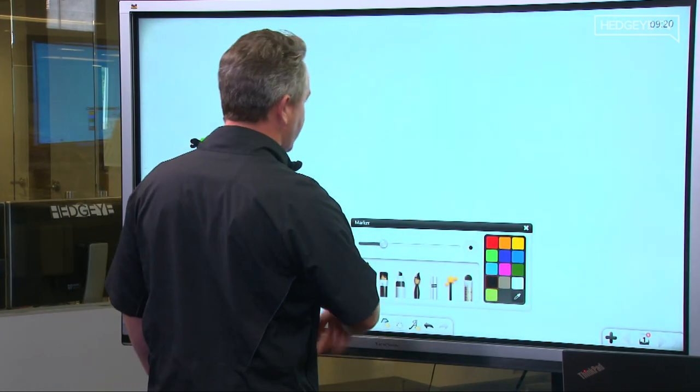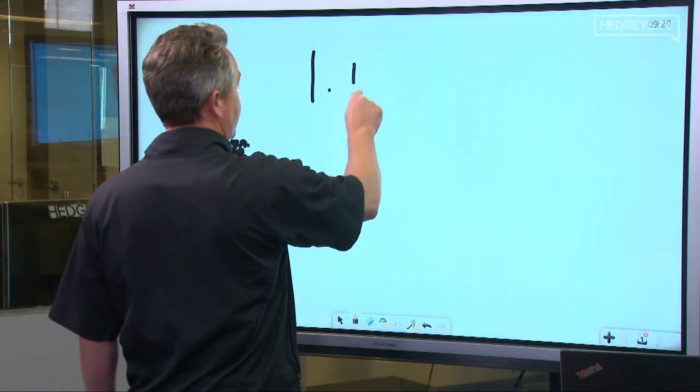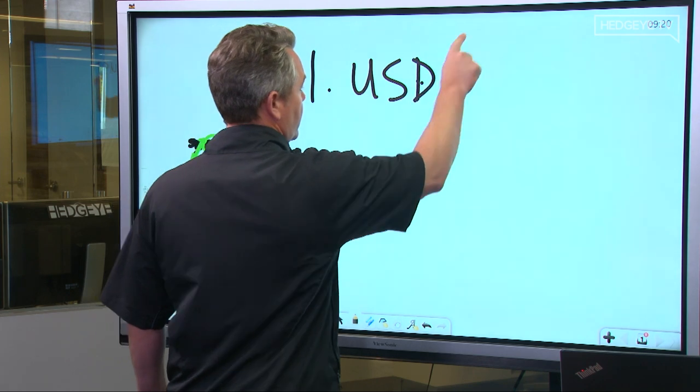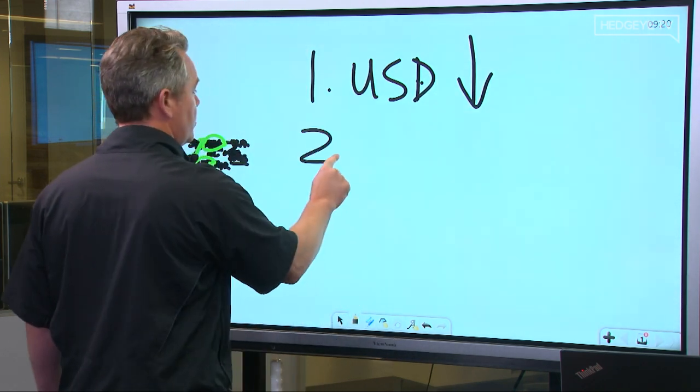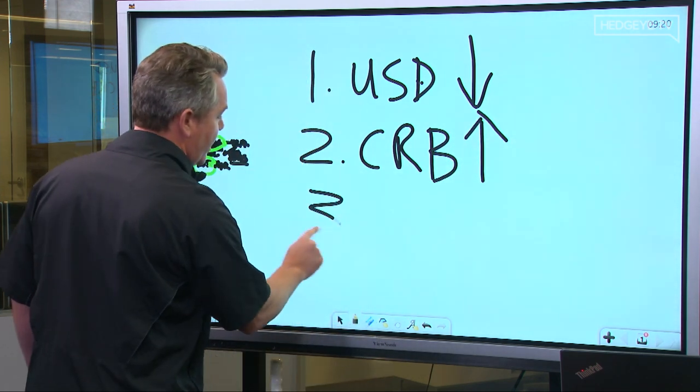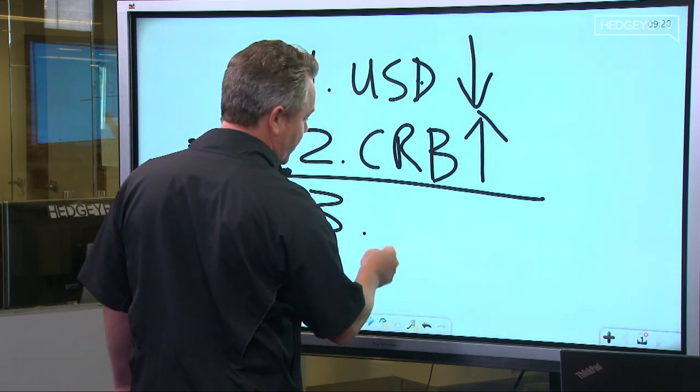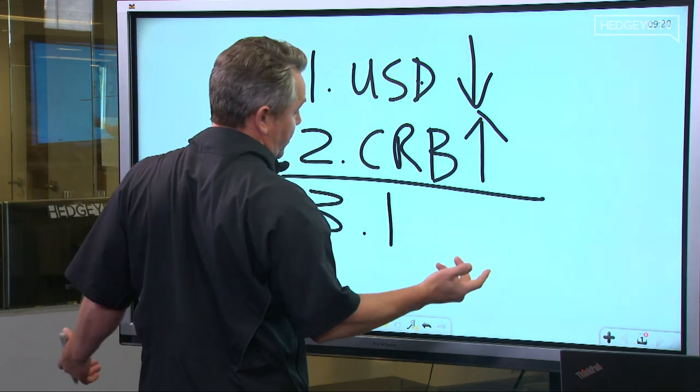We say, okay, number one: if I get the dollar right, it goes down. Two: I get the CRB, the commodities right, they go up. Then three: I front-run the Fed and the policymakers on basically getting the CPI surprises to the upside after these things happen.